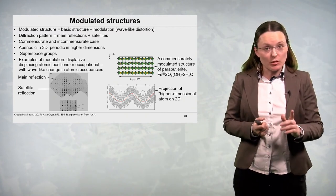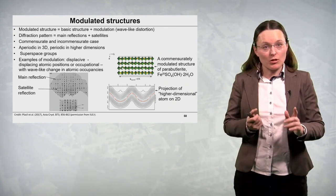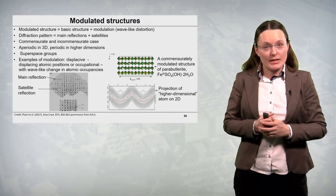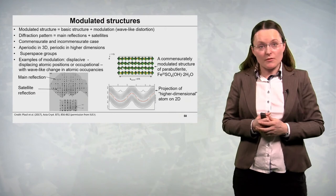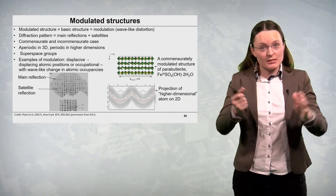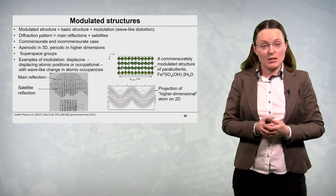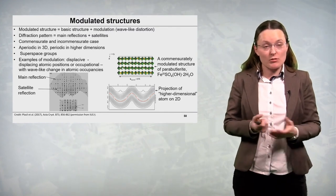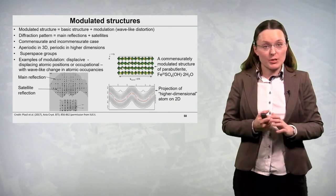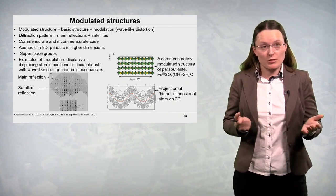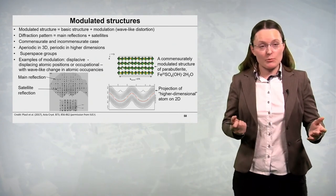But in the incommensurate case the modulation is non-commensurate with the identity period of the crystal structure. So in fact the whole crystal is a unit cell. And of course in this case we cannot use the methods of classical crystallography. So for many years it was a big problem that could not be solved. But then the mathematicians came to the rescue.